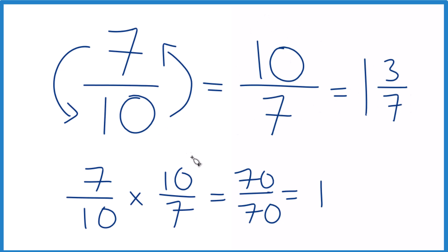This is Dr. B, finding the reciprocal for 7 tenths. The answer: 10 sevenths, or 1 and 3 sevenths. Thanks for watching.